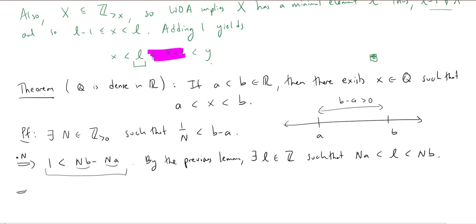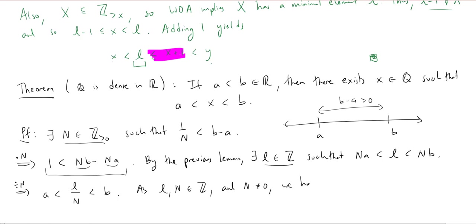Now let's divide by n. Since n is a positive integer, we're not worried about changing signs, and we get a is less than l over n, which is less than b. Since l and n are both integers and n is not zero, l over n is a rational number. That's our x — we wanted some number greater than a and less than b that is rational, and that's what we've found. This completes the proof of the density theorem for the rationals in the reals.